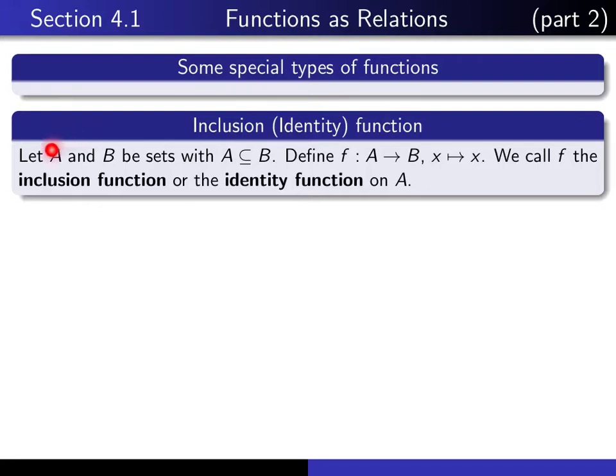So if A and B are any two sets, in which A is a subset of B, then we can define the function f from A to B by each x maps to itself. Whenever we have such a function, we refer to it as the inclusion function, or we also refer to it as the identity function on A.